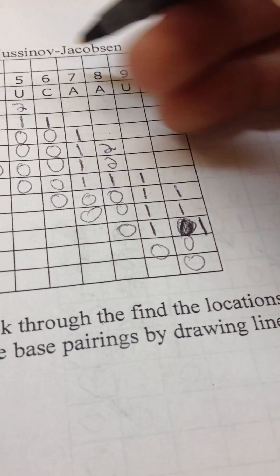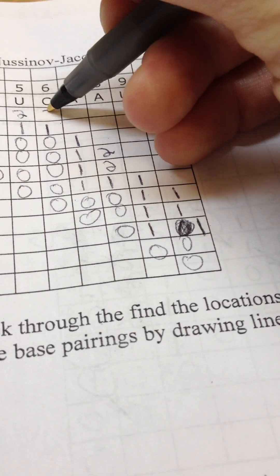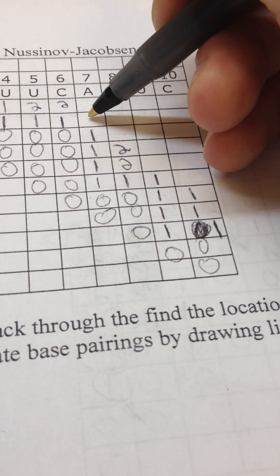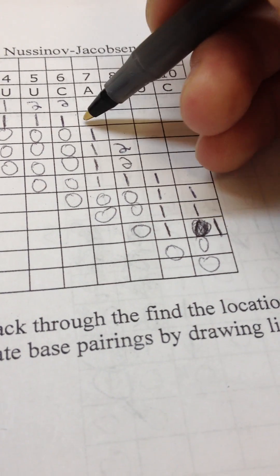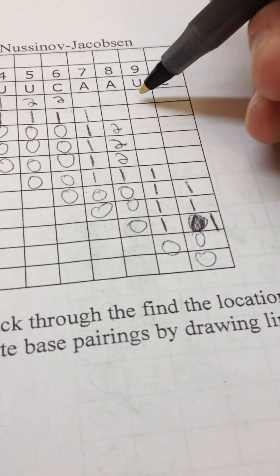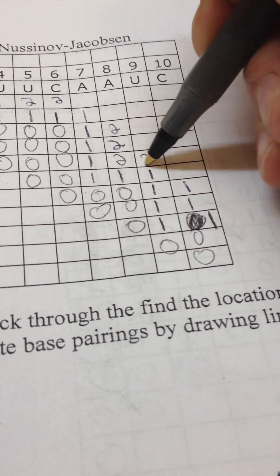C to C does not match, continuing with one. All right, we've got C to A, does not match, so we'll take this two. A to A does not match, so we'll take the highest out of these three, which is a one. A to C doesn't match, but we've got a two. U down to U, does not match, so we'll take two.